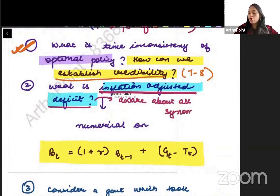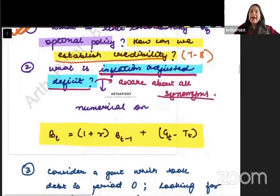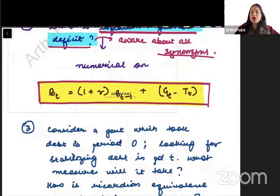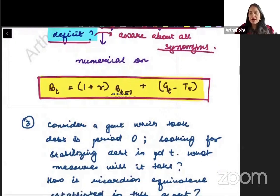What kind of name is this? You have to be aware about all synonyms. Koi bhi exam mein they can go ahead and ask you. And at the same time, you need to prepare yourself well with this equation. This equation pe there is a chance that a numerical can be asked.